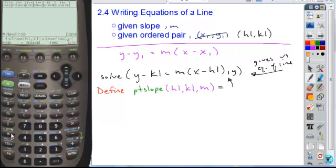Y minus K1, my given Y coordinate, is equal to M, my given slope, times the quantity X minus my given X coordinate, which is H1. Close it off. Identify Y as the variable I want to solve for.